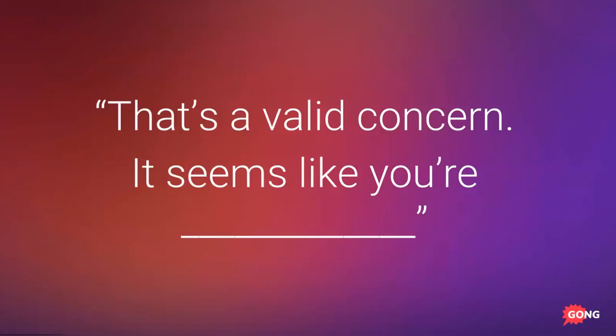A great phrase to keep in your back pocket to validate your buyer's concern is: 'That's a valid concern. It seems like you're...' and then fill in the blank with the emotion you're observing them express. For example, 'That's a really valid concern. It seems like you're torn on what to do.' Then pause and let them further explain. If you get this right, this is empathy on steroids — your buyer will likely never have felt more understood in their entire life.